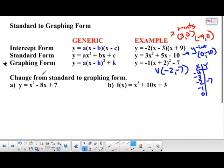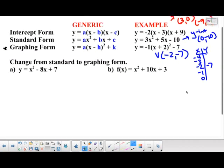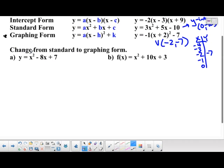The big thing we're learning is not only how to use this when it's in graphing form, but also how to convert from standard form to graphing form. I have two examples here. We're going to use the method we've been using in class called completing the square. Let's take a look at the first one: y equals x squared minus 8x plus 7.